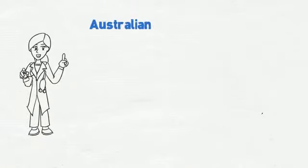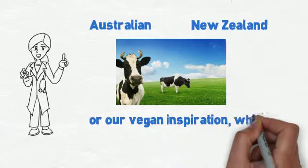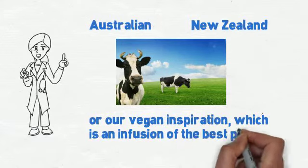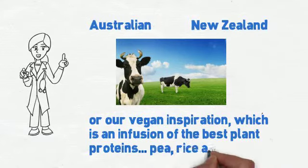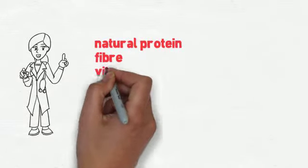We then take these unique flavors and blend them with either Australian or New Zealand grass-fed whey protein, or our vegan inspiration, which is an infusion of the best plant proteins: pea, rice, and hemp.